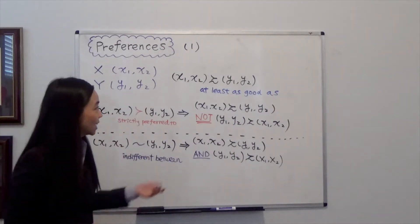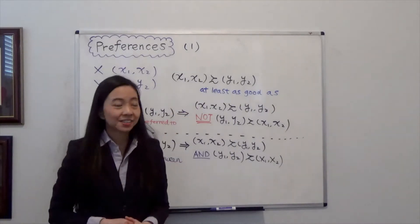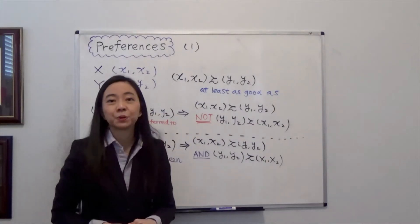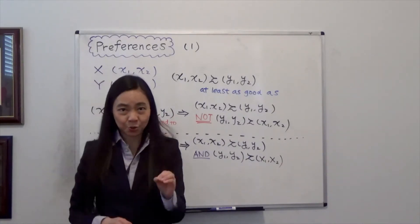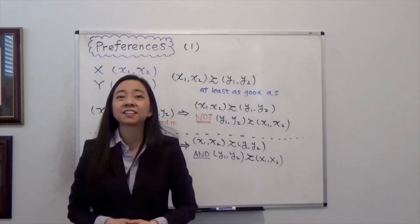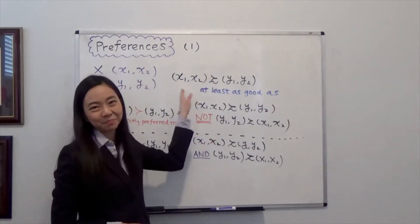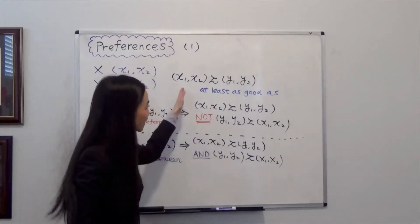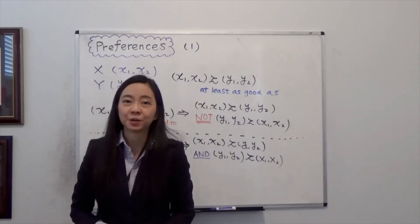We say that bundle X is at least as good as bundle Y when we observe a consumer presented with these two bundles and the consumer chooses X. Then we say bundle X is at least as good as bundle Y.